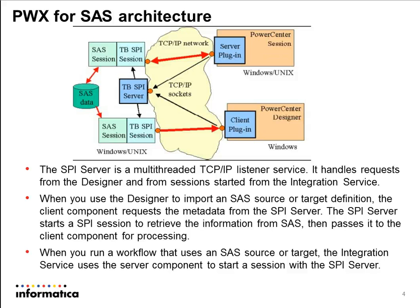The central component of PowerExchange for SAS is the communication component known as the SPI server. The SPI server is a multi-threaded TCP/IP listener service that needs to be running all the time on the SAS database if you wish to use SAS data objects within PowerCenter. The SPI server process handles requests from the designer and from sessions started using the integration service. When you use the designer to import an SAS source or target definition to the PowerCenter repository, the PowerExchange for SAS client component requires the metadata from the SPI server.